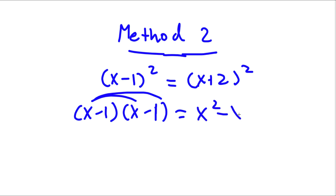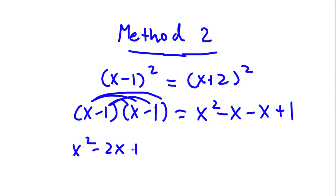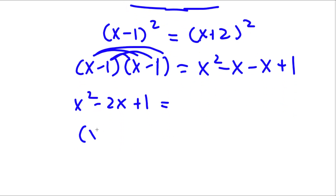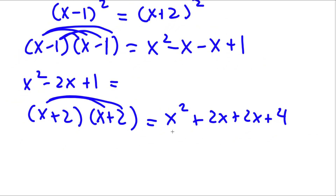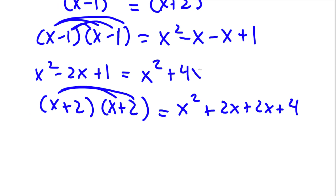x times negative 1 is negative x. I have to distribute the negative 1: negative 1 times x is negative x, and negative 1 times negative 1 is positive 1. Now negative x minus x is negative 2x. So I'm left with x squared minus 2x plus 1. Now this is equal to x plus 2 squared, which is x plus 2 times x plus 2. I can distribute the x: x times x is x squared, plus x times 2 is 2x. Then 2 times 2 is 4, and 2x plus 2x is 4x. So I have x squared plus 4x plus 4.